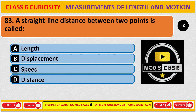A straight line distance between two points is called displacement. The correct answer is B, displacement.